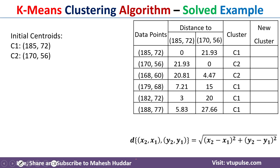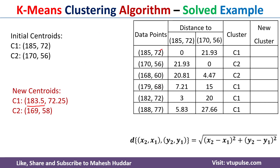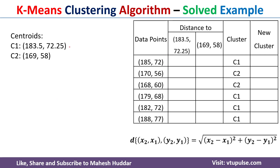Once we have divided the data points into clusters, we need to find the new centroids by averaging the data points in each cluster. The first cluster has four data points: the 1st, 4th, 5th, and 6th. Adding their x-values: (185 + 179 + 182 + 188) / 4 = 183.5, and their y-values: (72 + 68 + 72 + 77) / 4 = 72.25. For the second cluster: (170 + 168) / 2 = 169, and (56 + 60) / 2 = 58.